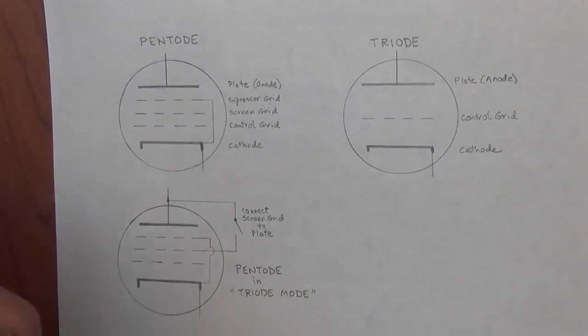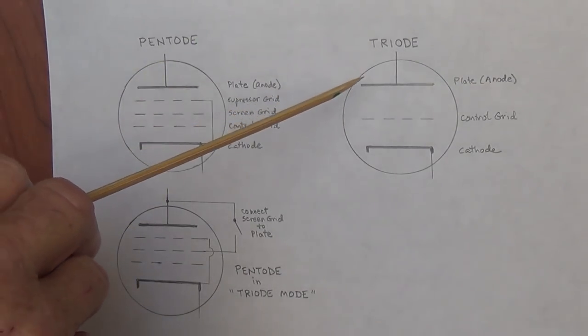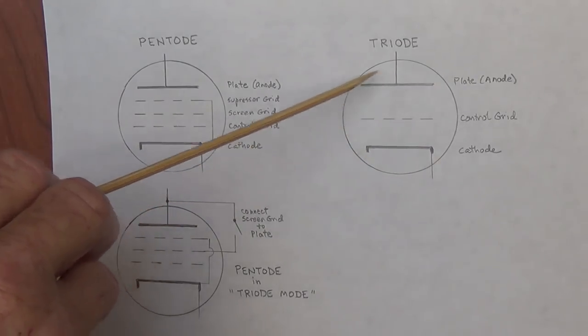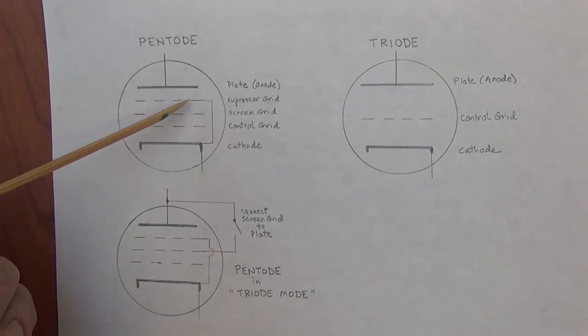Now let's look at the triode, which seems very simple by comparison. Plate, cathode, and in between is a control grid. Nothing fancy. None of these secondary and tertiary grids here to help accelerate electrons or return electrons to the plate.